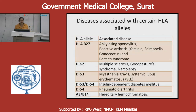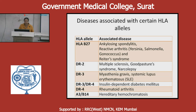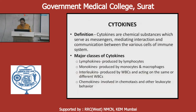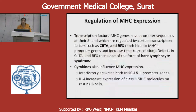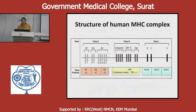Diseases associated with certain HLA alleles include: HLA-B27 associated with ankylosing spondylitis, reactive arthritis, and Reiter's syndrome; DR2 associated with multiple sclerosis, Goodpasture syndrome, and narcolepsy; DR3 associated with myasthenia gravis and systemic lupus erythematosus; DR3 and DR4 associated with insulin-dependent diabetes mellitus; DR4 associated with rheumatoid arthritis; and A3-B14 associated with hereditary hemochromatosis.